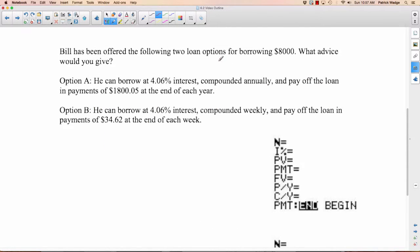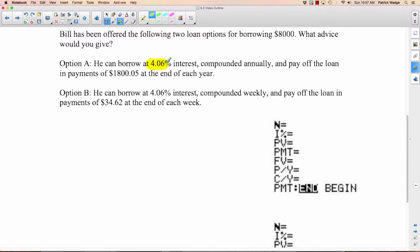Finally, Bill has been offered the following two loan options for borrowing $8,000. What advice would you give? We've got to do this twice and see which one's better. Start with option A. He can borrow at 4.06% interest, compounded annually, and pay off the loan in payments of $1,800.05 at the end of each year. End of each year, compounding annually, so that would be—if it's compounded annually, how many per year? Just one. How many payments per year? At the end of each year, so also just one. Final value—we want to pay it off, so that's going to be zero. How much is each payment? $1,800.05, and your payments are negative, so negative $1,800.05. Your present value is $8,000. That's positive, it's money in your pocket. The percentage is 4.06, and we want to know how long it would take to pay it off, so this is your question mark.